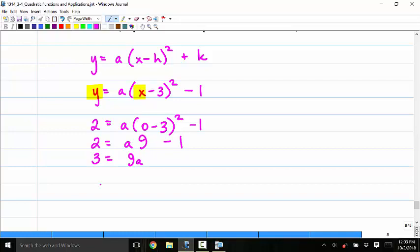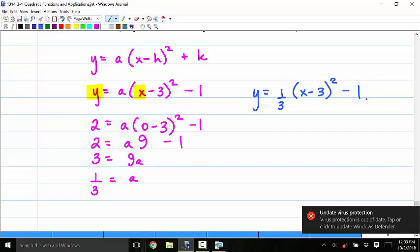And I get 3 over 9, or one third, is equal to A. So the equation would become Y equals one third times (X minus 3) squared minus 1.